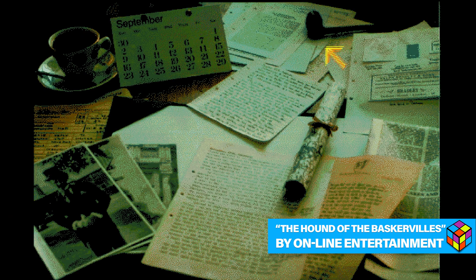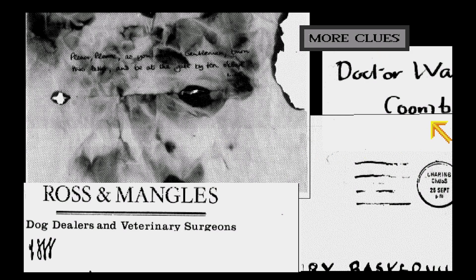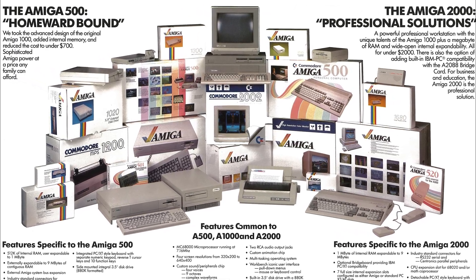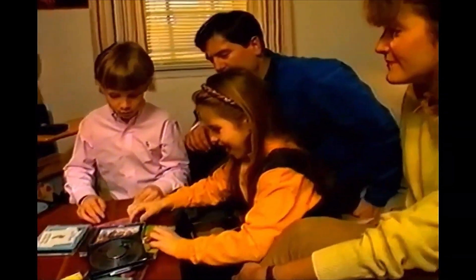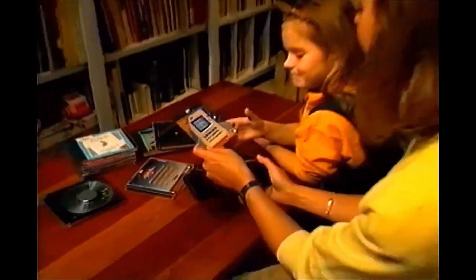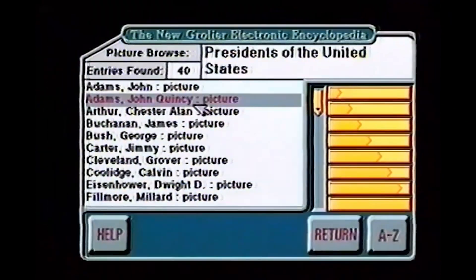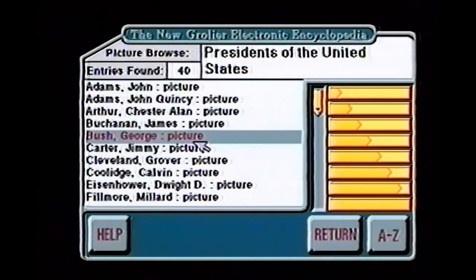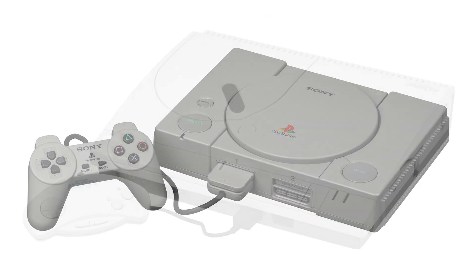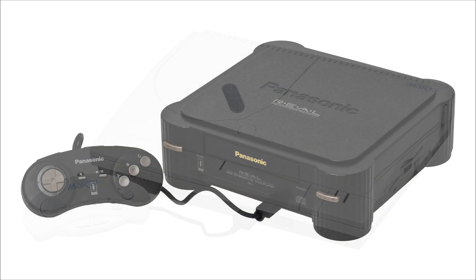This, coupled with the shifting dynamics in the market, led to the discontinuation of the CD-TV as Commodore refocused on its Amiga computer line. The historical significance of the Commodore CD-TV lies in its early attempt to integrate multimedia into a home entertainment device. Its struggles and eventual discontinuation marked a chapter in the evolving landscape of multimedia and gaming convergence. As CD-ROM technology continued to evolve, later generations of consoles and computers were built upon the lessons learned from pioneering devices like the Commodore CD-TV.